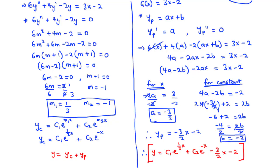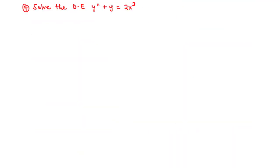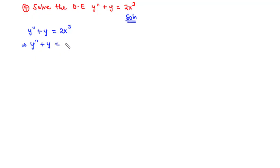Now let's solve example 4. We are asked to solve the differential equation y'' + y = 2x³. We treat this as a homogeneous equation by making the right-hand side zero: y'' + y = 0. The auxiliary equation is m² + 1 = 0.